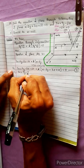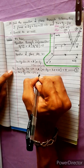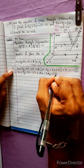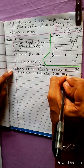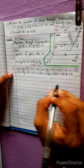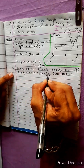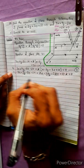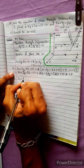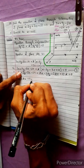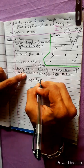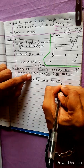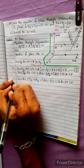Expanding: 3x plus 5y minus 2z minus 14 plus kx minus 2ky plus 3kz plus 10k equal to zero. Now collecting like terms: 3x plus kx, then the y terms, the z terms, and the constants.